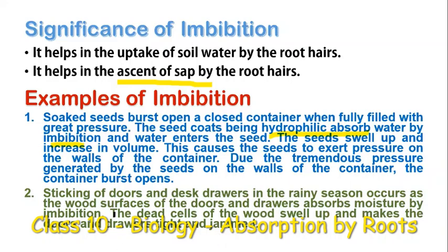There is one more example of imbibition. During the rainy season, doors, windows, and drawers get tight and jammed. This happens because the dry surfaces of the doors, windows, or drawers absorb water from the humid air by imbibition. They swell up, so the gap between the window and window frame, or between the drawer and the table, gets reduced, making them jammed.